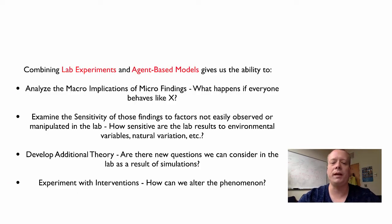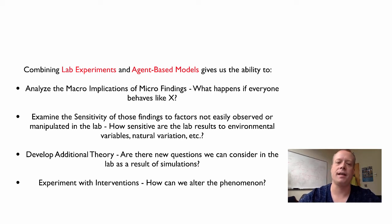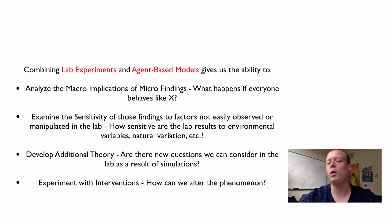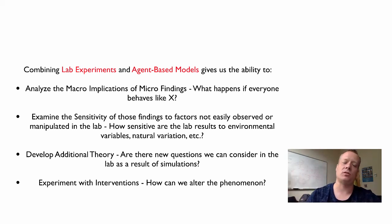We emphasize four major aspects of the benefits of combining lab experiments and agent-based models. First, it allows you to analyze the macro implications of micro-level findings — the old question: what happens if everyone behaves like X? If you find a particular lab result, what happens if everyone uses that result, and what would happen as a result of that?